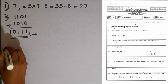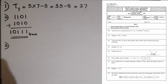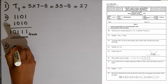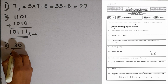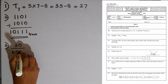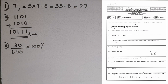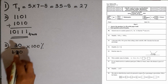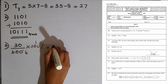In the third question, a discount of 30 rupees is given when selling a shirt worth 600 rupees. Calculate the discount percentage. Discount goes in the numerator and the worth of the shirt (600) in the denominator, then multiply by 100%. So 30 divided by 600 multiplied by 100 gives 5%.